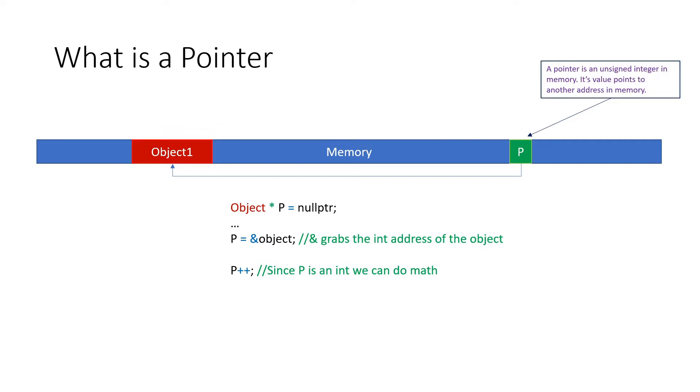If we wanted to assign this pointer to point to an actually allocated object, we would take a reference to that object and use the AND sign to convert it to an integer value which can be contained inside of our pointer.